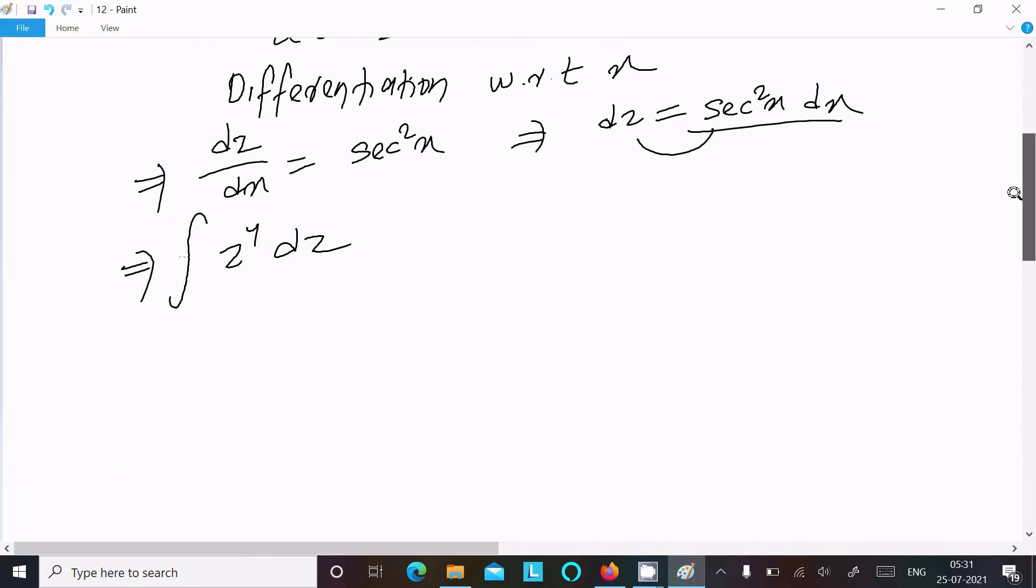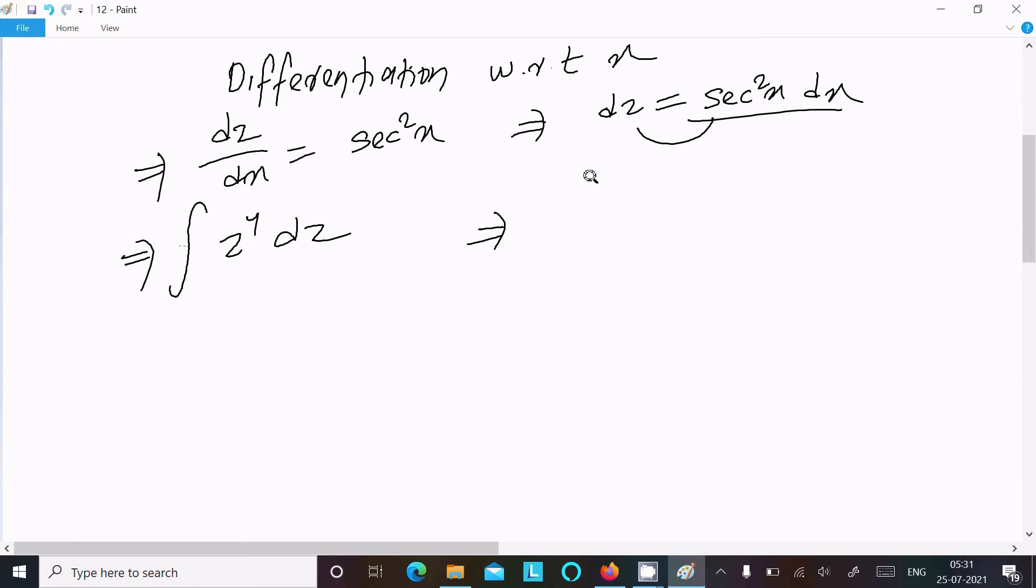After that here let's do the integration of z⁴. That is equal to z⁴⁺¹ divided by 4 plus 1. And c is the constant.